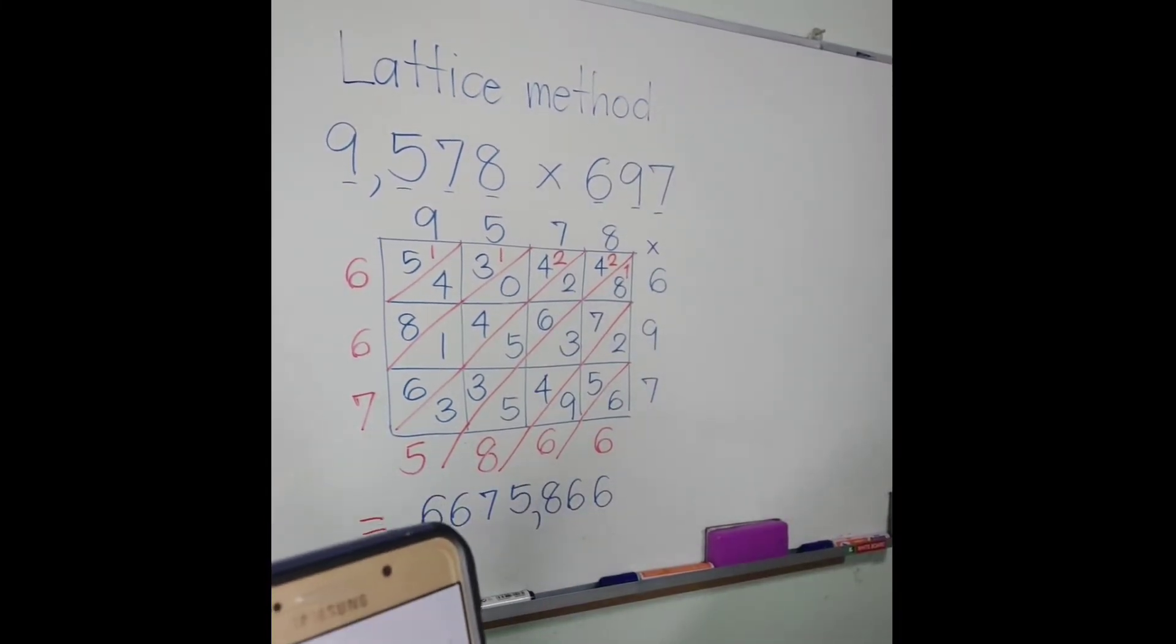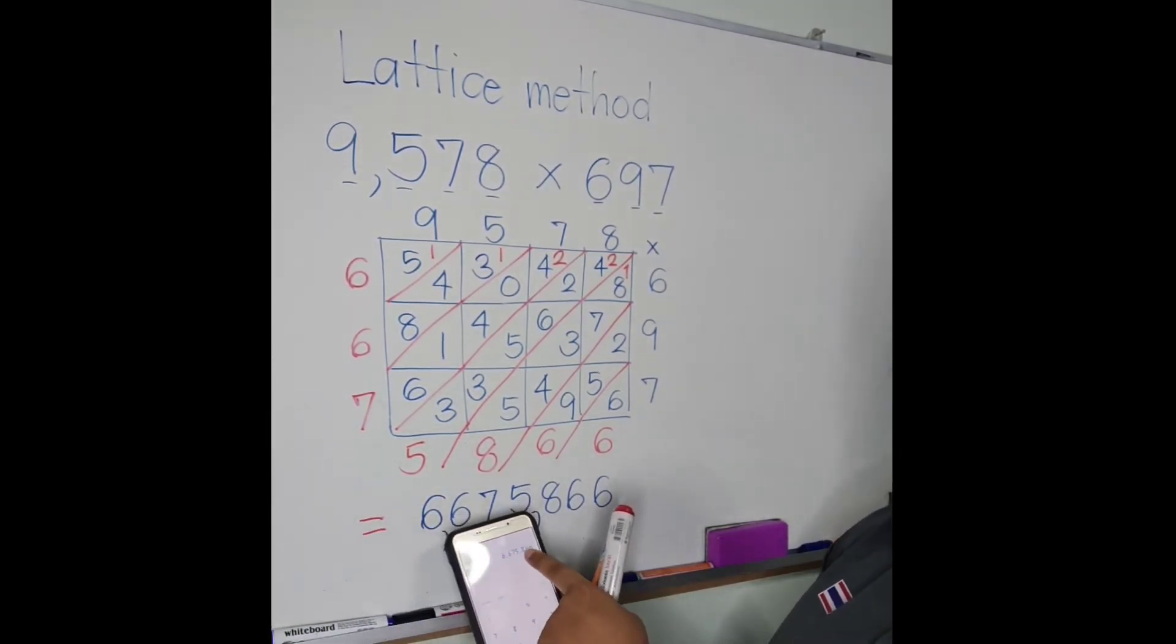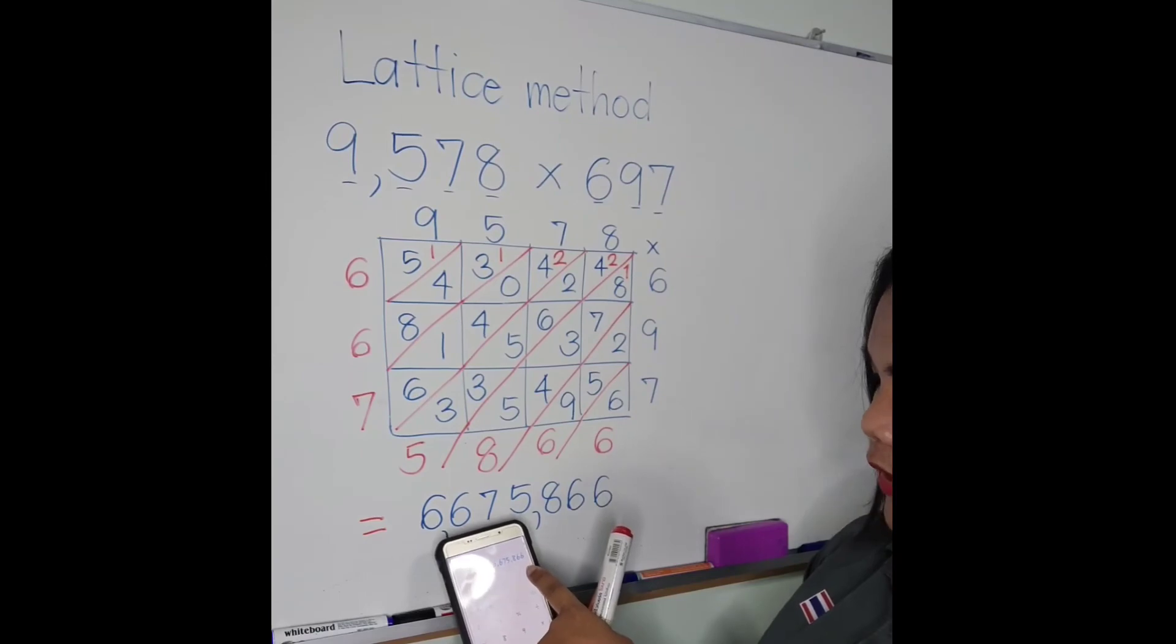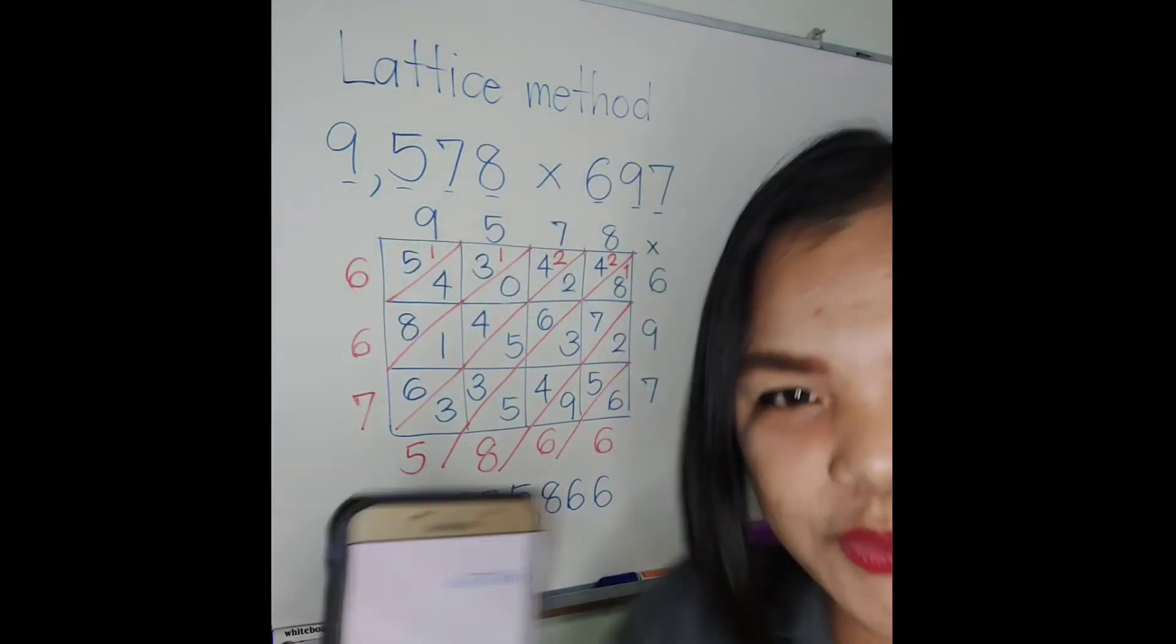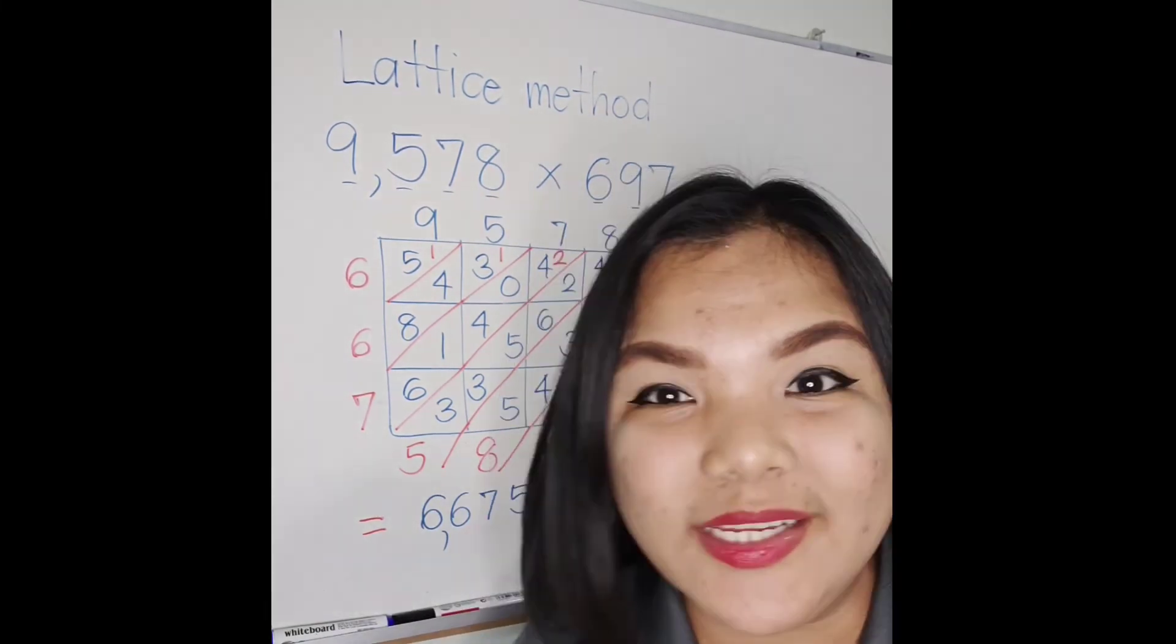Okay, let's check. 9,578 times 697. And the answer is 6,675,866. Yun! Bongga! Okay, nakuha po ba?